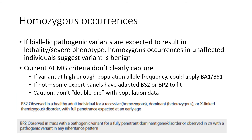Thinking in terms of homozygosity, while homozygous occurrence isn't clearly called out within the current ACMG-AMP benign criteria, for some disorders it may be appropriate to consider, perhaps falling under the BS2 or BP2 criteria. Population databases like gnomAD typically include individuals who have reached adulthood and are relatively healthy, at least in the context of severe pediatric onset conditions. Therefore, if a condition causes early morbidity in individuals with homozygous or compound heterozygous pathogenic variants,